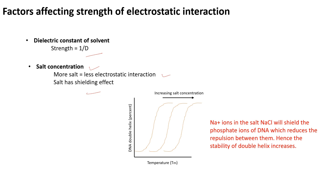Looking at the graph, the y-axis shows TM — melting temperature — which is the temperature at which 50% of double-stranded DNA melts into single-stranded DNA. As we increase salt concentration, the same DNA that used to melt at 20°C now melts at 40°C, and with even more salt it melts at 60°C. This means more heat is required to break the DNA, so the DNA becomes more stable with increasing salt concentration.